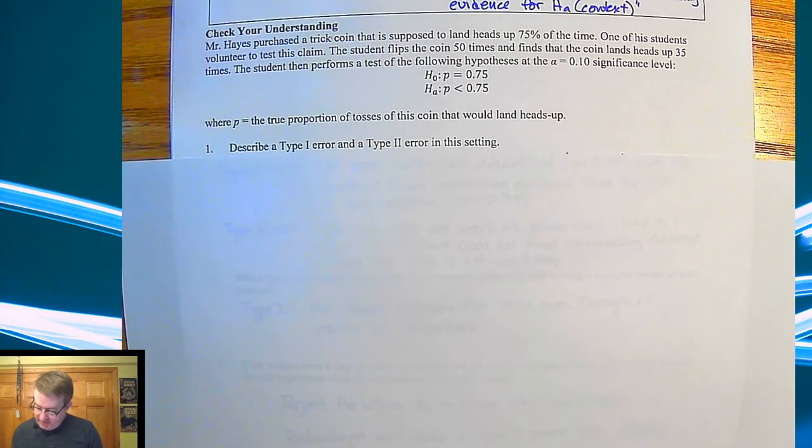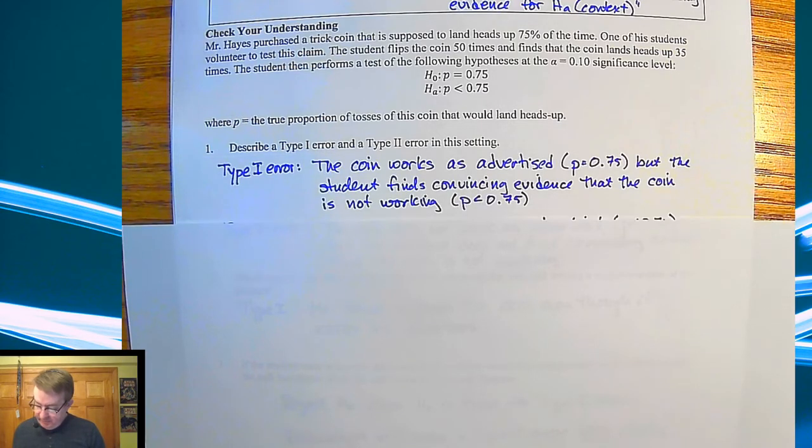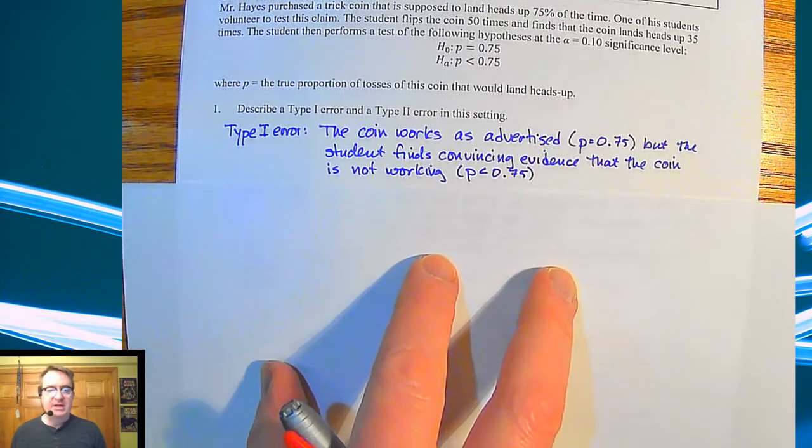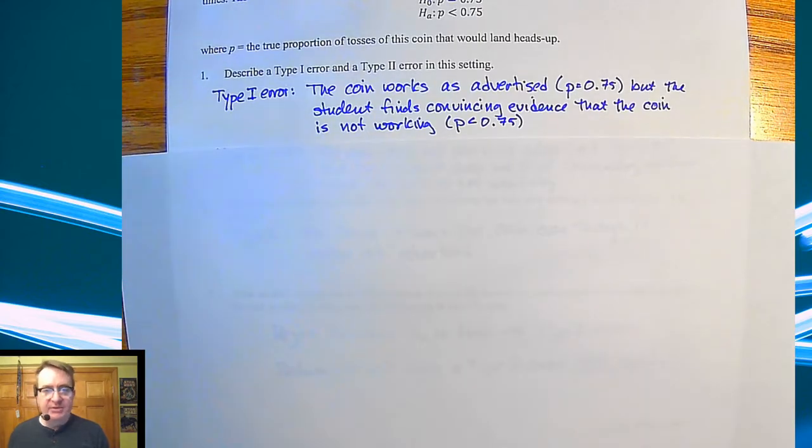All right. So describe the Type I error and the Type II error in the setting. Type I error says this: the coin works as advertised, it does actually flip and land heads up 75% of the time, but the student finds convincing evidence that the coin is not working.